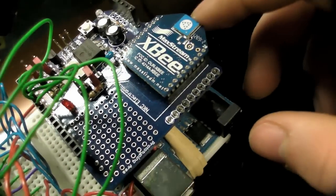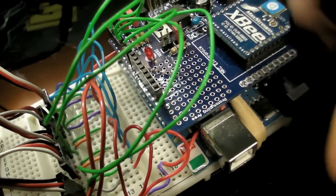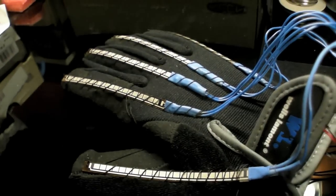Brought back over here to the receiving XB and the receiving Arduino. From here this sends out whatever the corresponding finger angle to the corresponding servo on the animatronic hand.